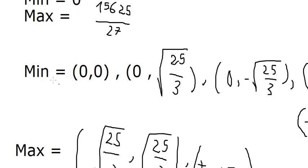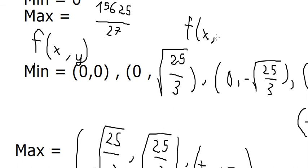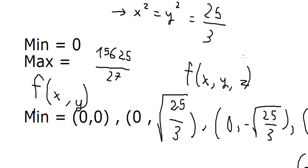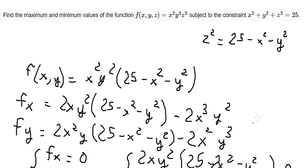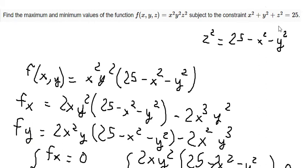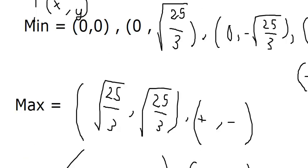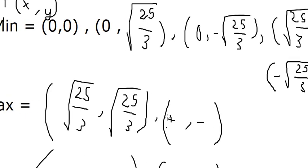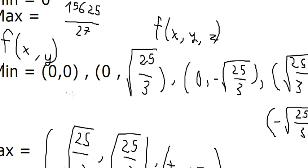For the function f(x, y, z), we can find the value of z by substituting the values of x and y back into the constraint equation z squared equals 25 minus x squared minus y squared. Because there are many points, I just focus on the function f(x, y) here.